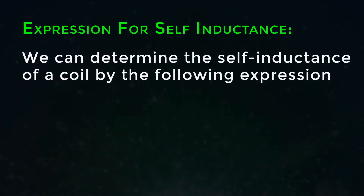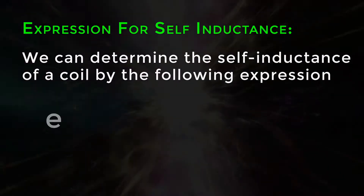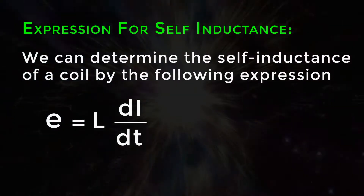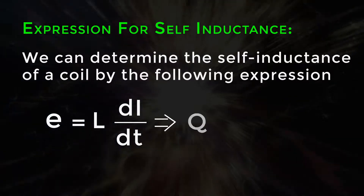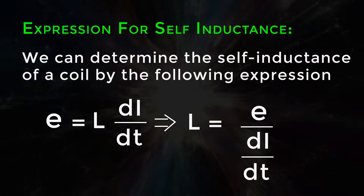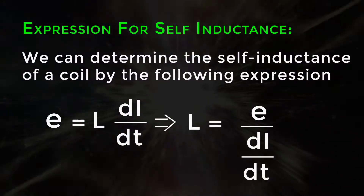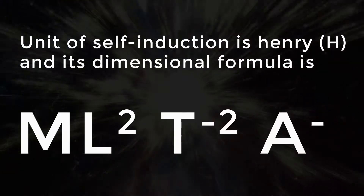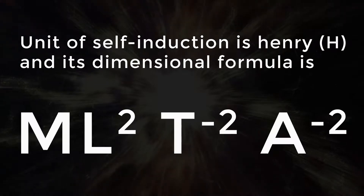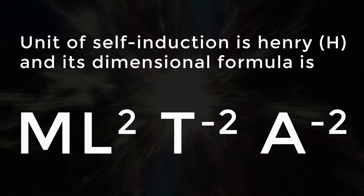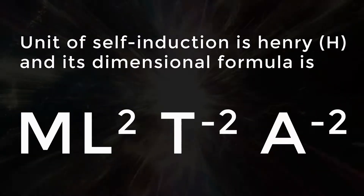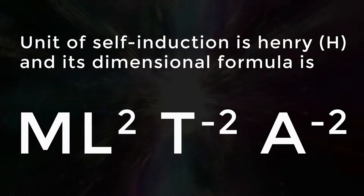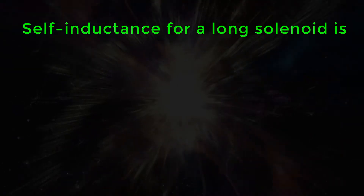The self-inductance of a coil is given by the expression: E = L × (di/dt), or L = E ÷ (di/dt). The unit of self-inductance is Henry (H), and its dimensional formula is M L² T⁻² A⁻².